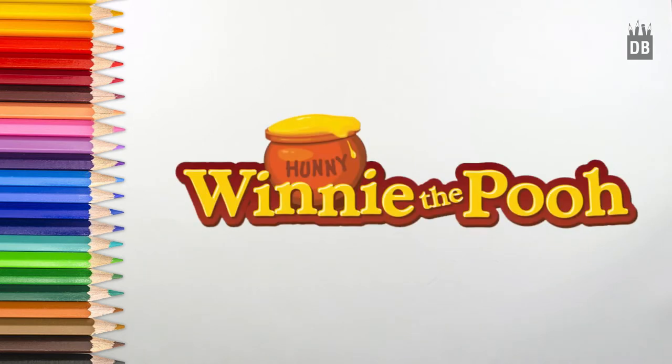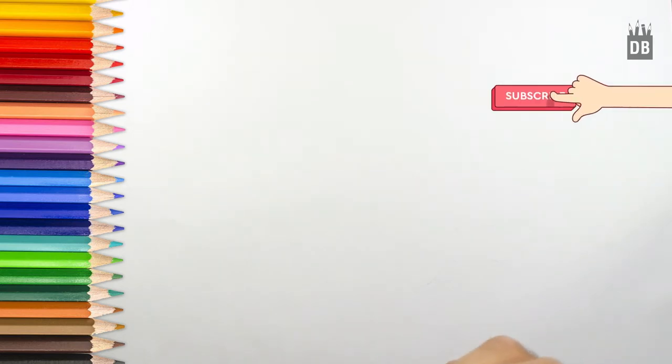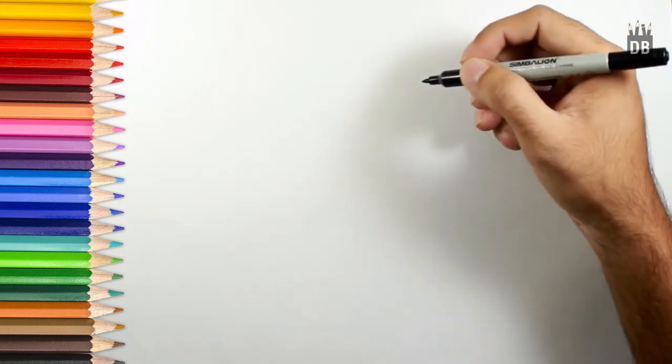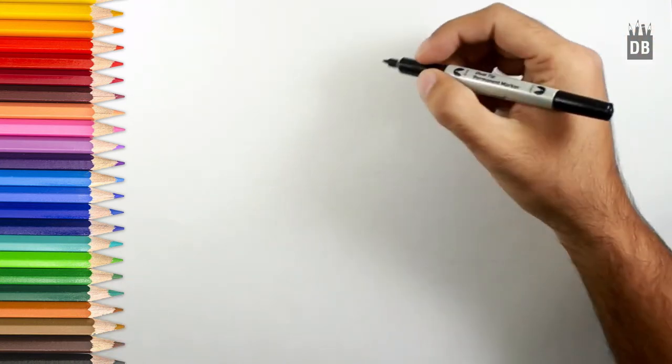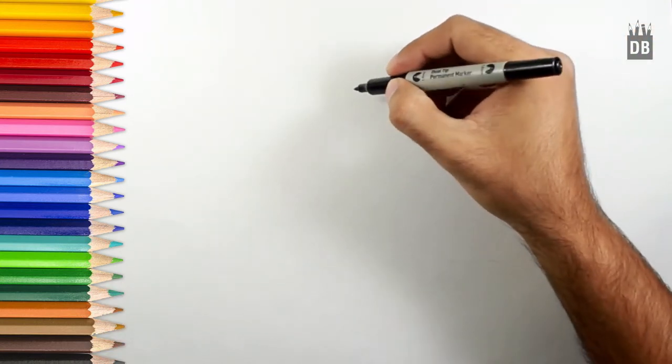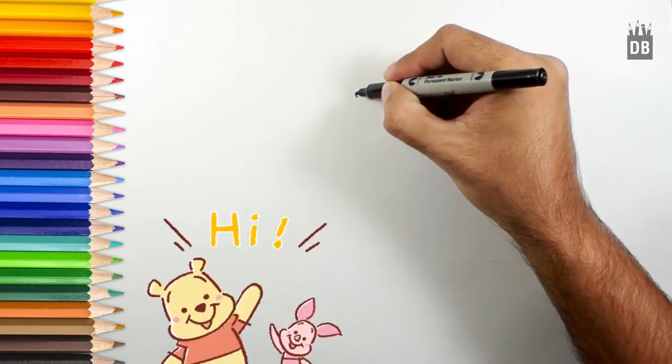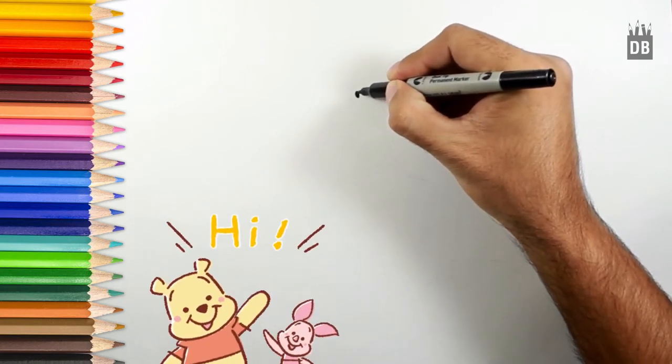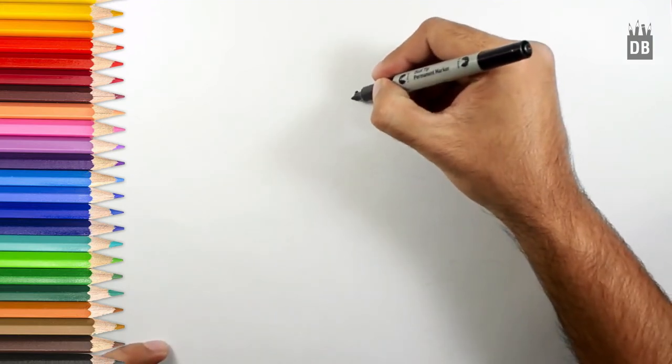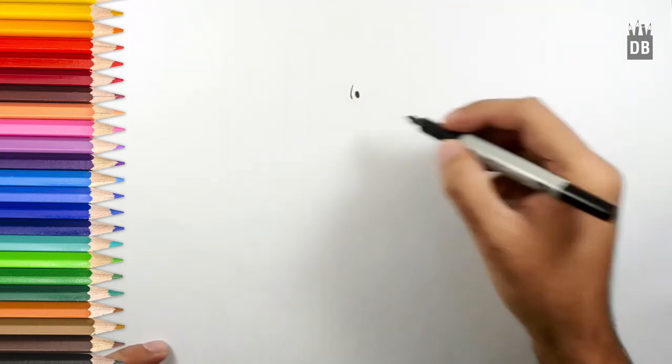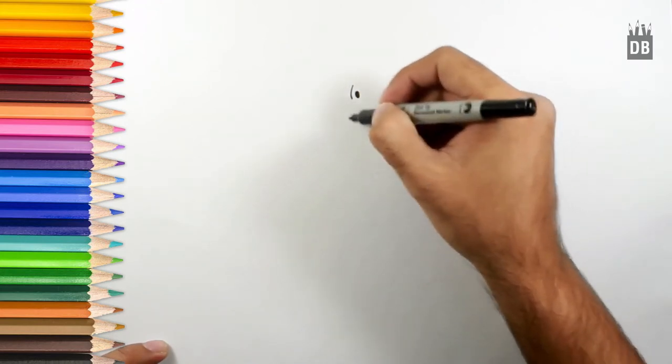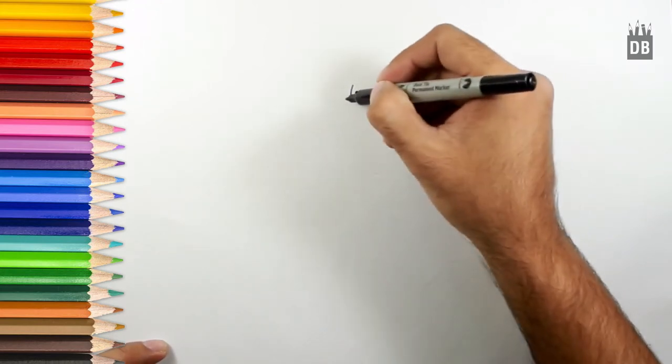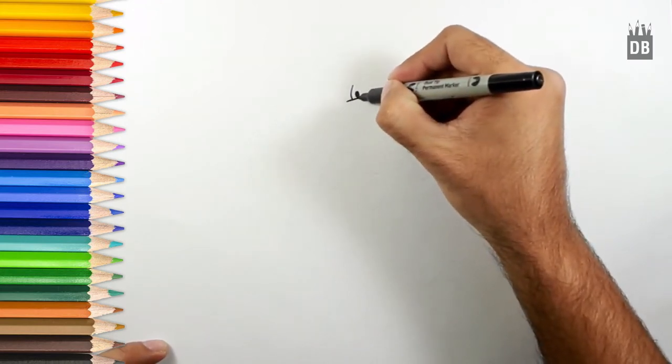Welcome to Drawing Book Studio, and today we are going to make Winnie the Pooh. Let's start. We will start from his eyes, and this will give us an idea of his face. Make a little bit oval shape eye, and alongside that a line. From here we will make his nose and mouth line.